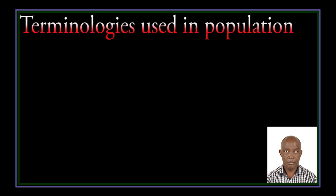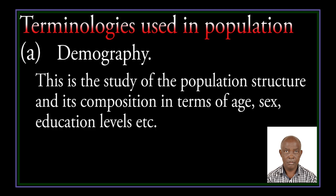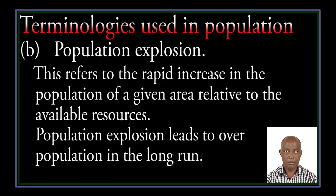Terminologies used in population. Demography: this is the study of the population structure and its composition in terms of age, sex, education levels, and so on. Population explosion: this refers to the rapid increase in the population of a given area relative to available resources. Population explosion leads to overpopulation in the long run.